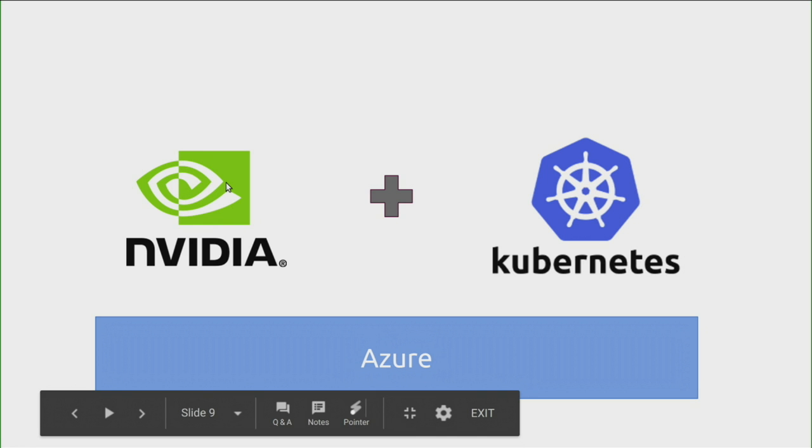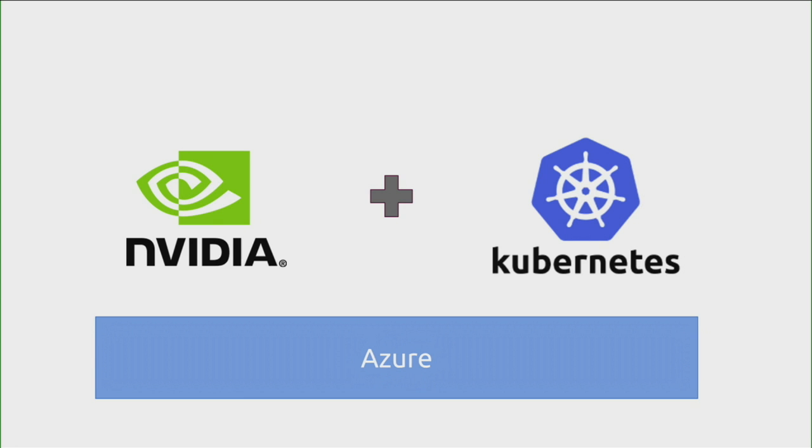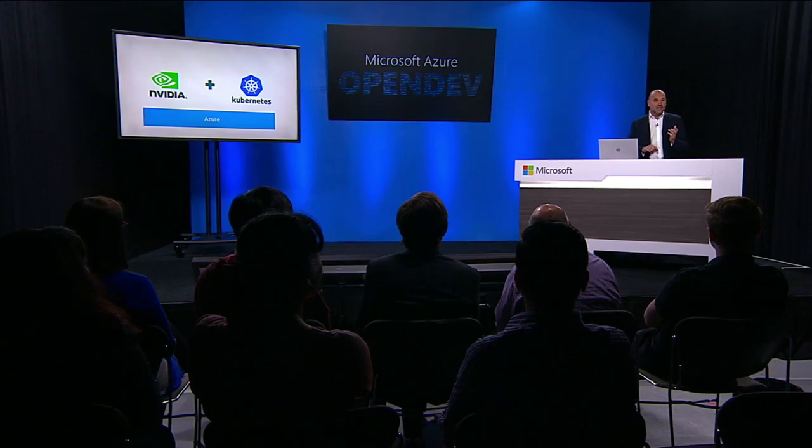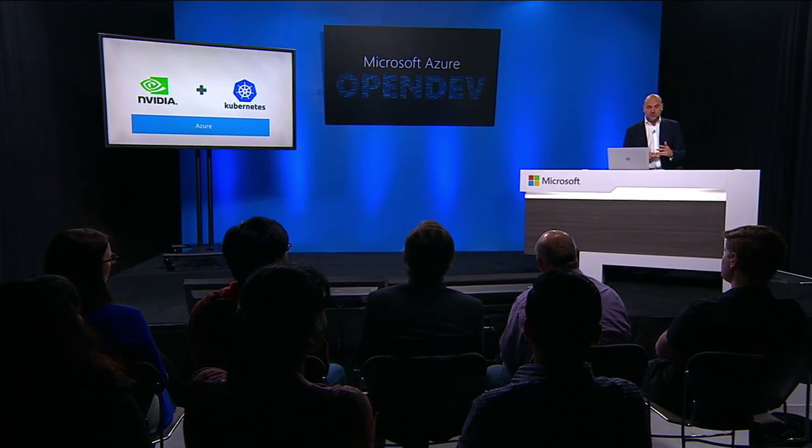ConjureUp will give you a vanilla Kubernetes where all the compute is standard and container processes have access to standard x86 VM capabilities. But it would be more interesting to use some of the newer capabilities of Azure. So for the next step I'm going to dig under the hood and show you how to spin up that same topology but using GPGPUs, which give you access to much faster parallel compute for number-crunching workloads — exactly where blockchain or TensorFlow machine learning become super interesting.